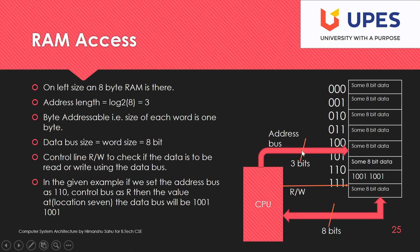The data bus is 8 bits and is bidirectional because data can move to and fro. The address bus is unidirectional. There is one control line representing whether we read or write. If the CPU wants to read memory location 110, it generates address 110 on the address bus, which picks the memory location holding data 10011001.